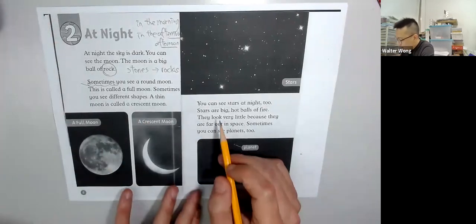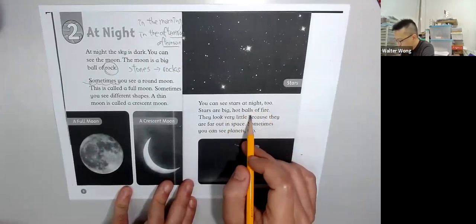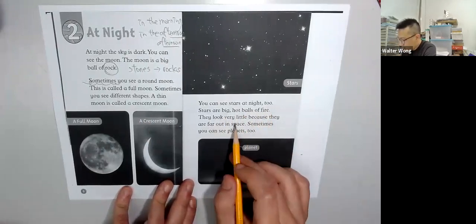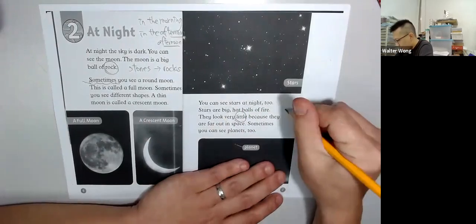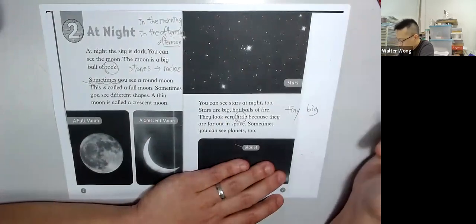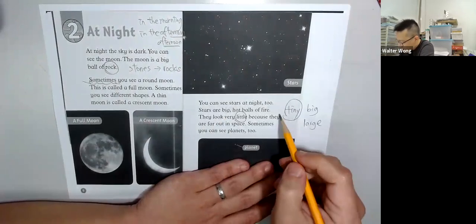You can see stars at night too. Stars are big balls of fire. They look very little. 細小一點我們叫 tiny, big, 再大一點叫 large. Tiny, little.